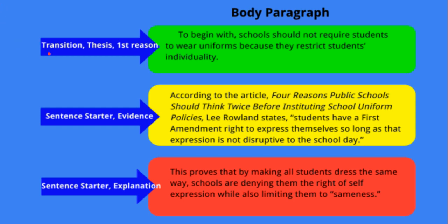For your first sentence, we're going to be looking for a transition, followed by your thesis and your first reason. A lot of the things you've already written in your thesis statement, we're going to keep using over and over again. For example, 'To begin with' is my transition. Here's my thesis: 'schools should not require students to wear uniforms.' And then here's my reason: 'because they restrict students' individuality.' This is pretty similar to what I wrote in my thesis statement already.